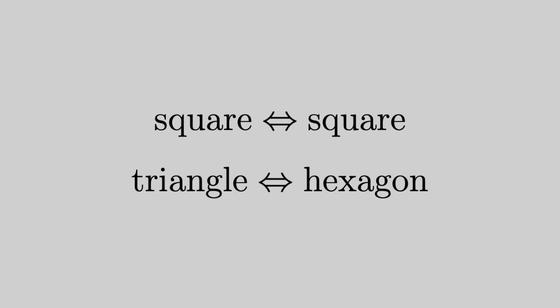And in fact, we call this the dual lattice. So a square lattice is self dual. A triangular lattice is dual to a hexagonal lattice. And then the hexagonal lattice is dual back to a triangular lattice.